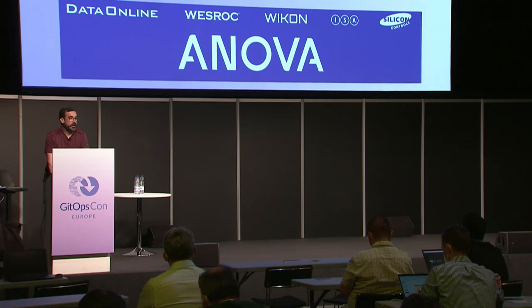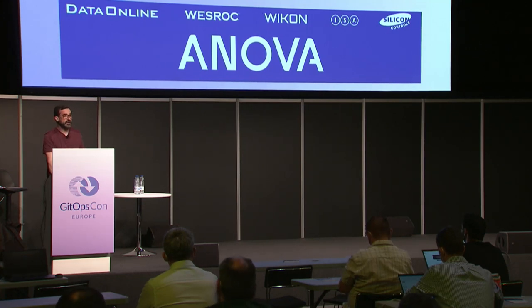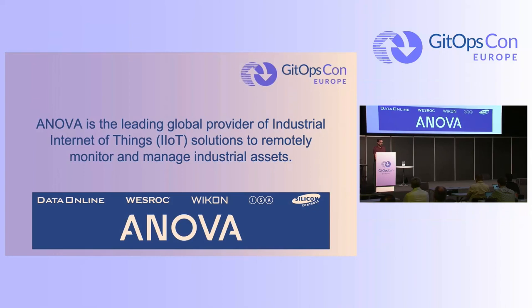ANOVA is the global leading provider of industrial IoT, and is the result of a merger of five well-established companies. With that, we had five platforms and five different ways to build software and deliver it.